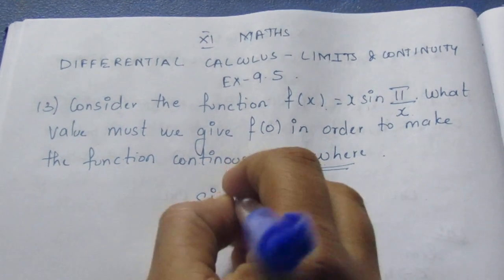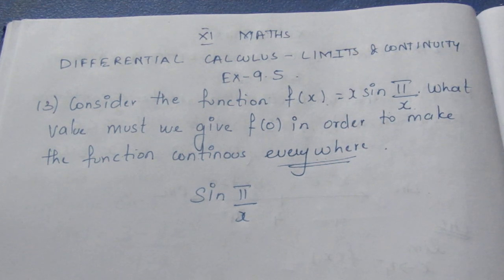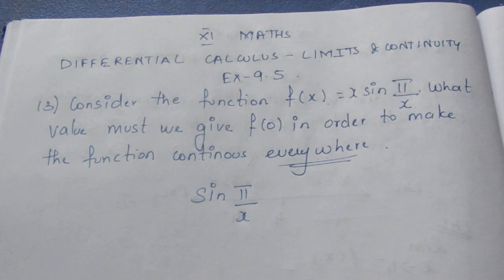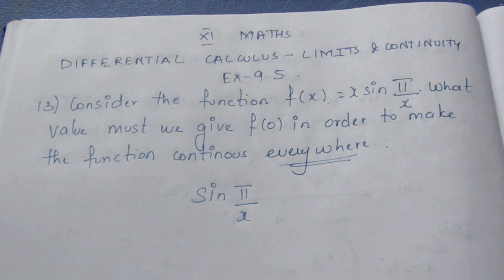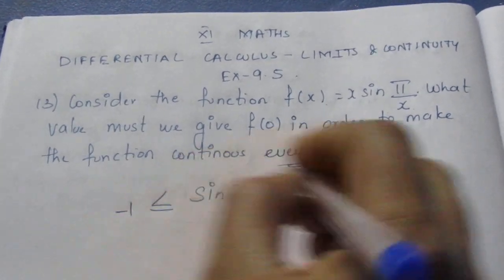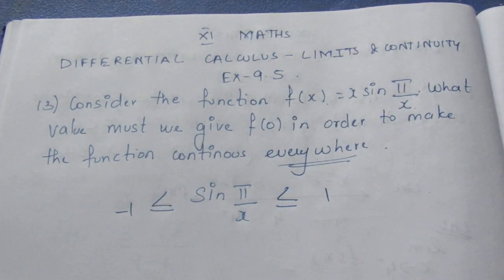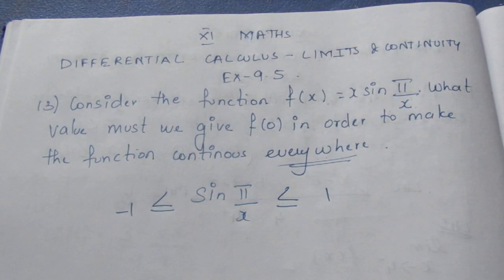Now, sin(π/x) is sin θ. From trigonometry, sin θ is always greater than or equal to -1 and less than or equal to +1. The sin θ value lies between -1 and +1.